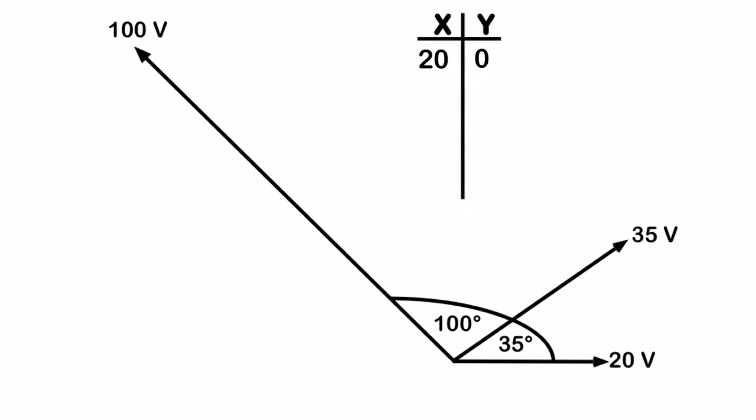Now for this guy here, I've got 35 volts at 35 degrees, so what I'm going to do with that is I'm going to take the cos of 35 degrees times 35 volts, and I get my X, and I'm going to take the sine of 35 degrees and multiply that by 35 volts to get my Y.